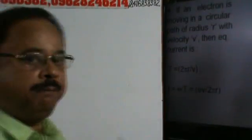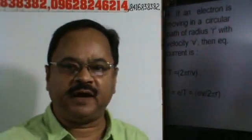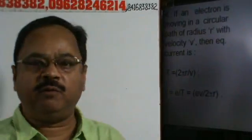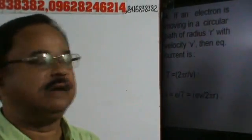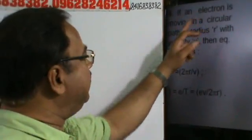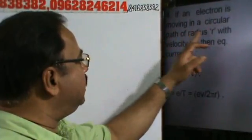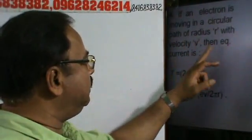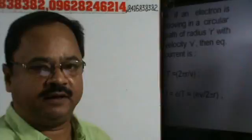Next problem. Up-magnet - the flow of charge can occur by revolving of electron around nucleus, right? If an electron is moving in a circular path of radius R with velocity V, then equivalent current is...